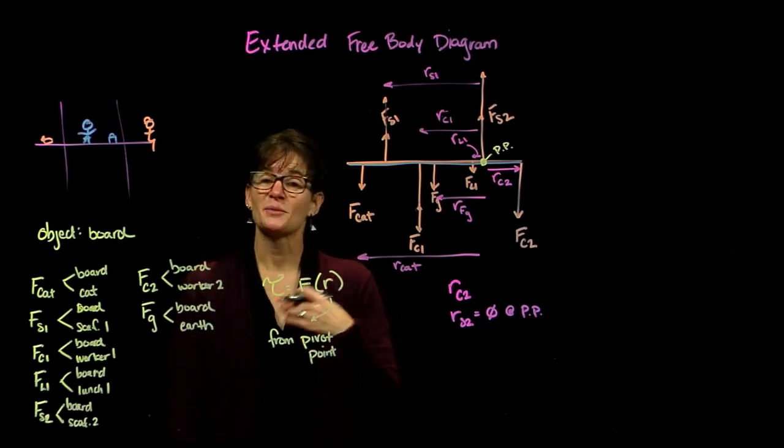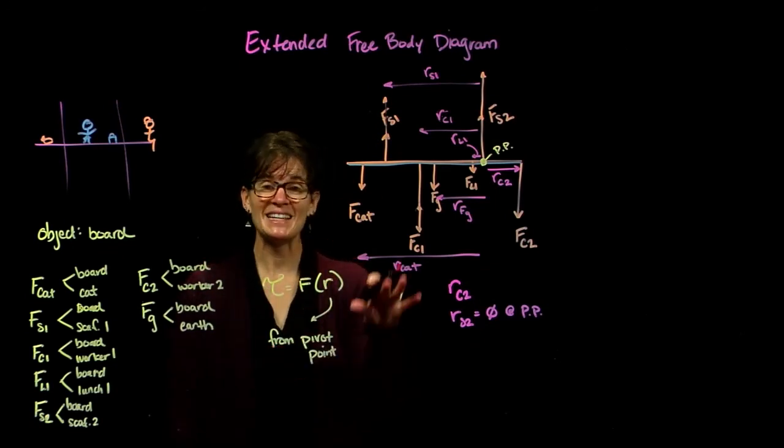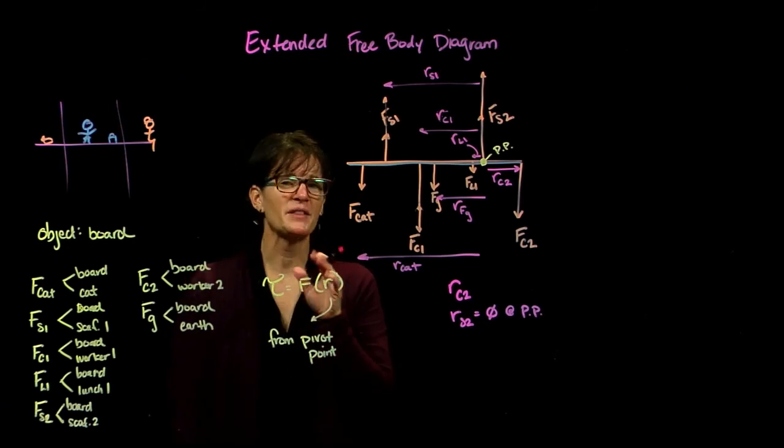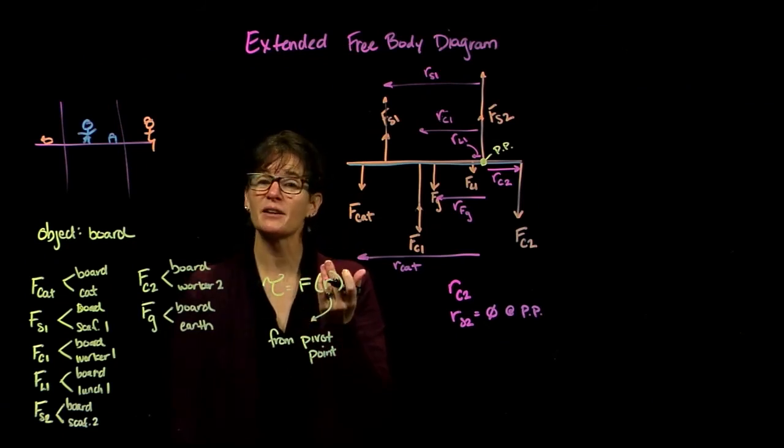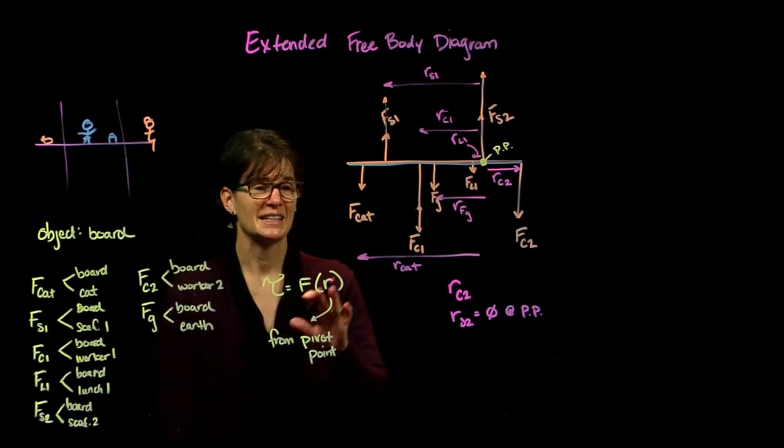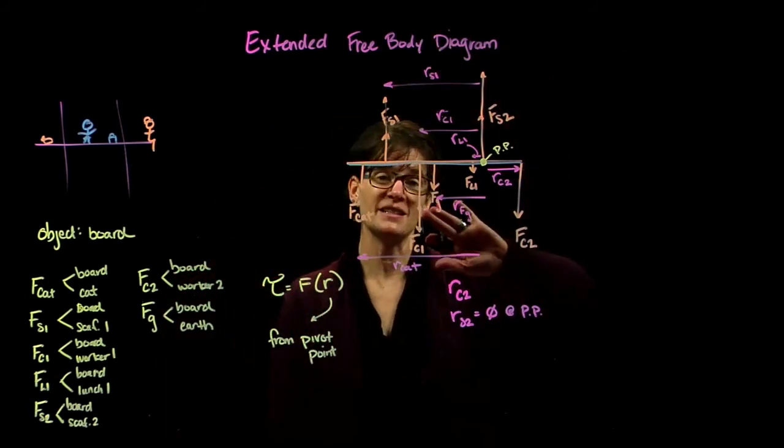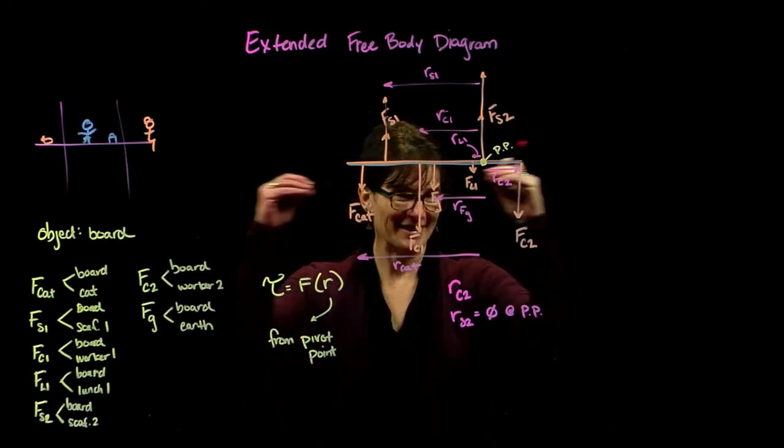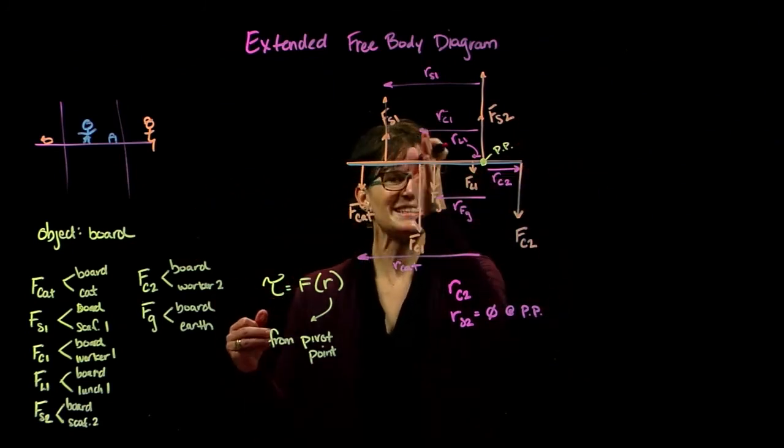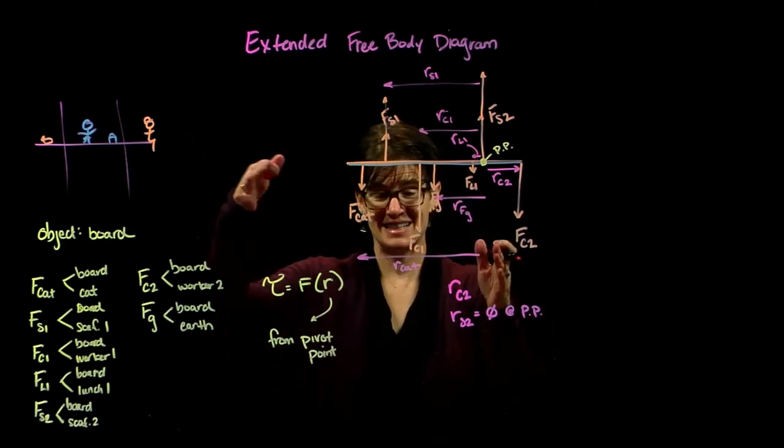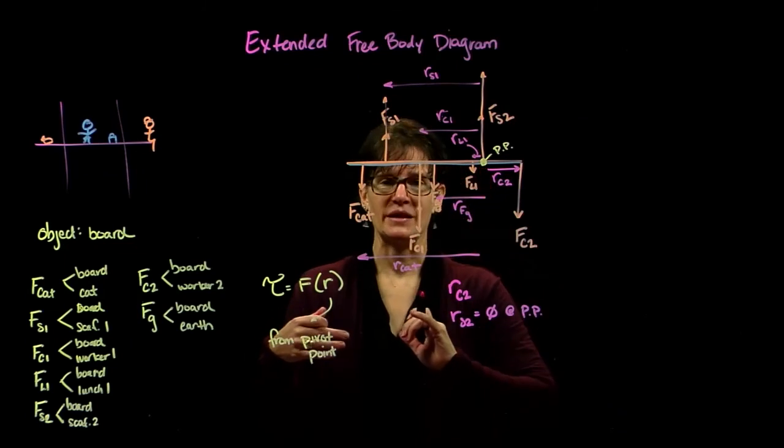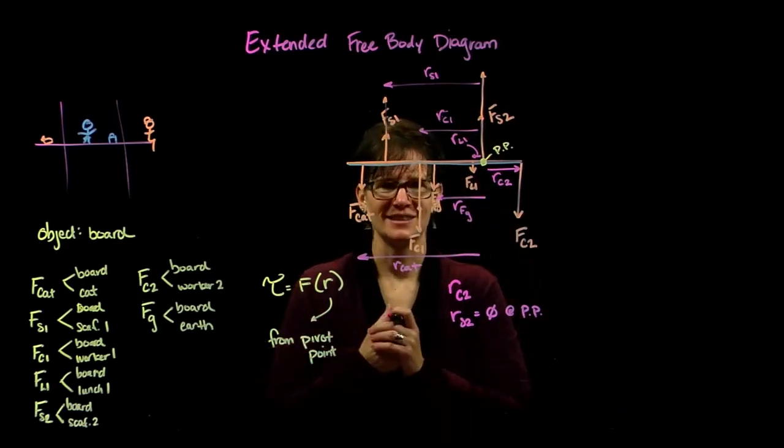Now as we learned about torques, we can see which direction each of these torques, each of these forces would induce a torque based on that pivot point. Now this is in part of the extended free body diagram, but let's just practice that in addition. So here is our extended free body diagram showing the object as an elongated dot. The forces are acting at the locations as they are on that object, identifying a pivot point, and then identifying the different radii.